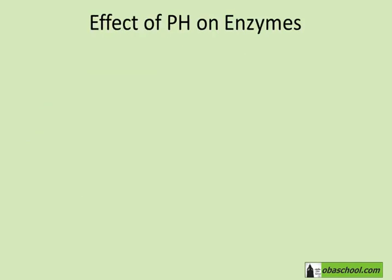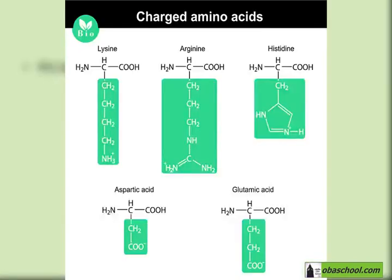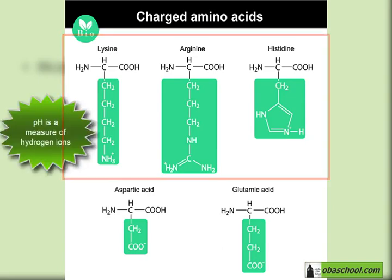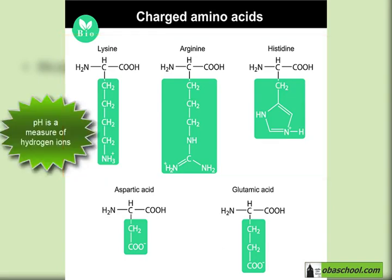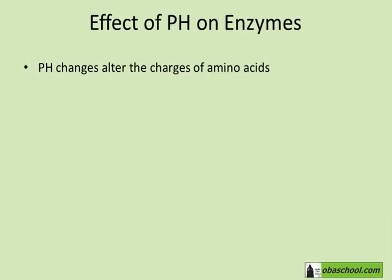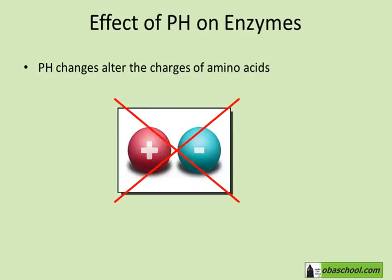So what does the pH do on a molecular level to enzymes? The pH changes alter the charges of amino acids. There are amino acids with positive and negative charges, and these charges can be changed. If you have an amino acid with a net positive charge and you change its pH, it might suddenly become neutralized — because pH is a measure of hydrogen ions. In an acidic pH you have a lot of hydrogen ions; in a basic pH you have few. These ions can neutralize the charges of some amino acids, disrupting the ionic bonds that the amino acid is forming.